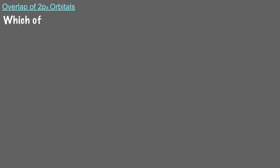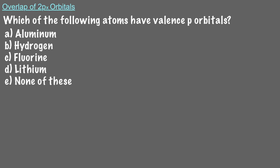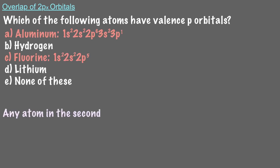To review, which of the following atoms have valence p orbitals? To be clear, every atom can have an electron with a p-shaped electron wave, even something like hydrogen, whose ground state electron is 1s. You would just need to excite the 1s electron to an excited state like 2p or 3p to get a p-shaped electron. Atoms like aluminum and fluorine have p-electrons, but any atom in the second period or lower will have valence p orbitals.